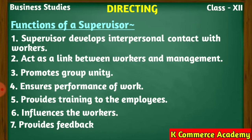The fourth function is that the supervisor ensures performance of work. This is actually the main function of a supervisor — to ensure that the work is performed. If any worker, subordinate, or labor is sitting idle, not working, wasting time or resources, in all such situations the supervisor will guide, instruct, and help them, and lastly ensure that the work is performed by that worker.